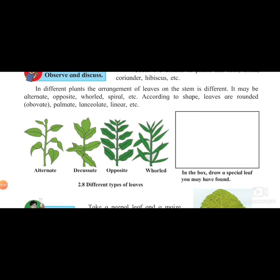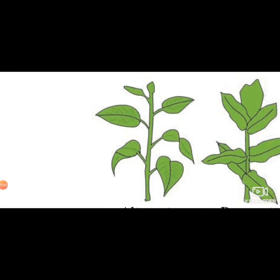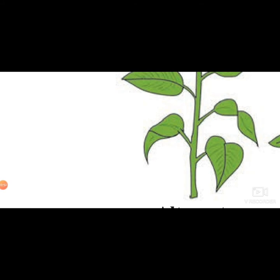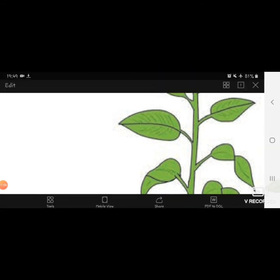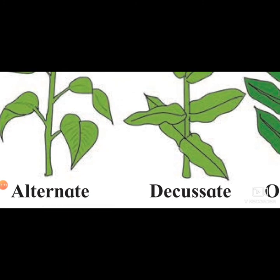In different plants, the arrangement of leaves on the stem is different. Some are alternate, some are opposite, some are whorled, and some are spiral. Alternate arrangement means one leaf is present, and then the next leaf is present above it on the opposite side - one on the right, then one on the left, alternating as you go up the stem.